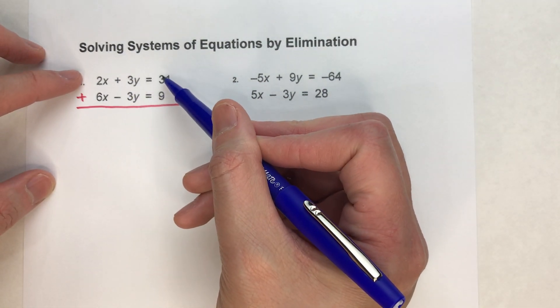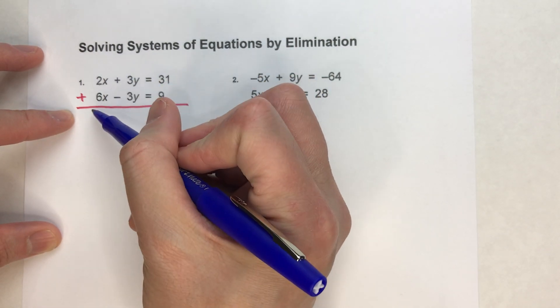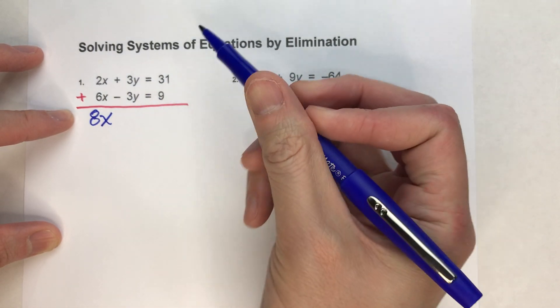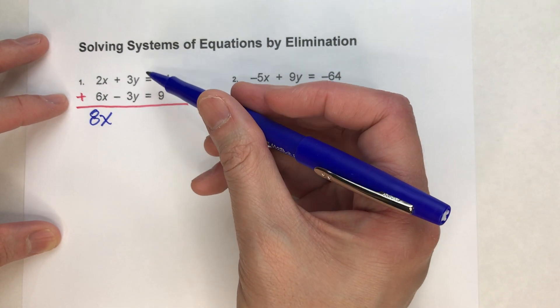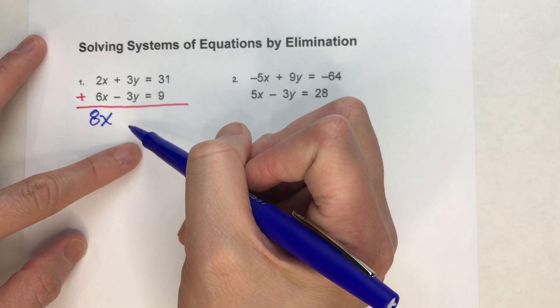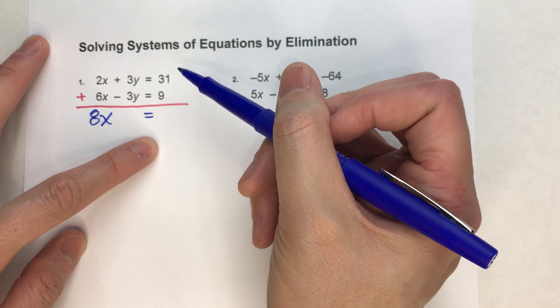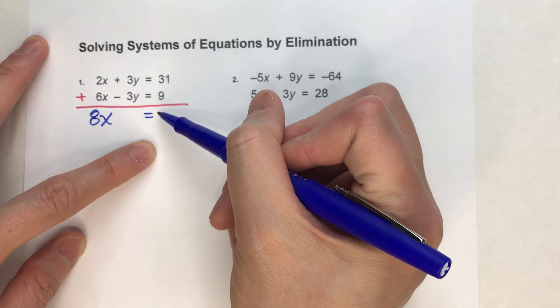Because when I add the top equation with the bottom equation, notice I get 2x plus 6x gets me 8x. But when we add the y's, 3y plus negative 3y, we get no y's. Drop down my equals, and on the other side, 31 plus 9 is 40.